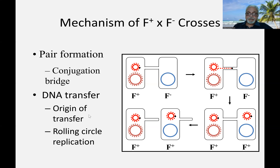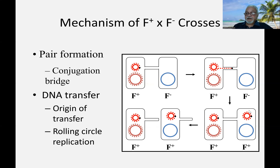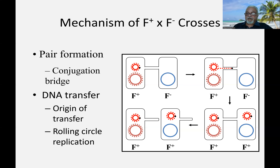The mechanism is that there is a nick at the origin of transfer, then rolling circle replication moves the DNA. The DNA moves as single-stranded DNA, not double-stranded, and the second strand is synthesized in the recipient cell, establishing the plasmid there. If the plasmid has acquired some host cell genes, those will also move along with the plasmid — this will be discussed a little later.